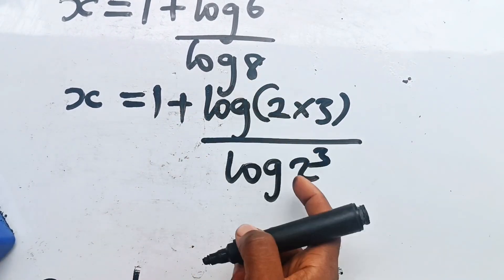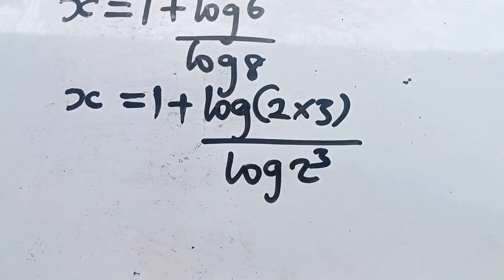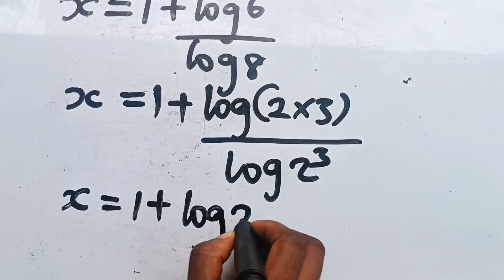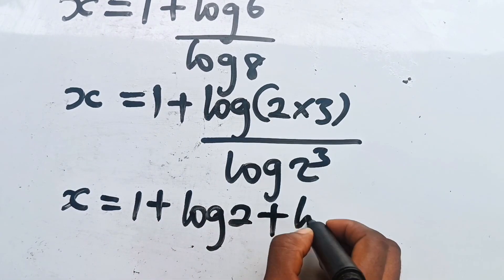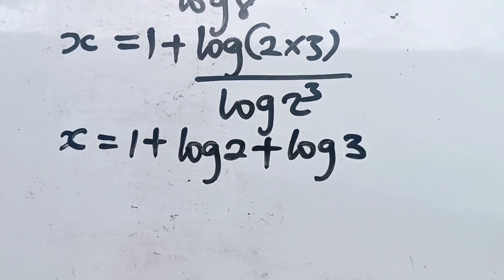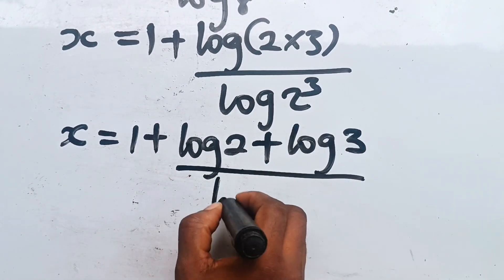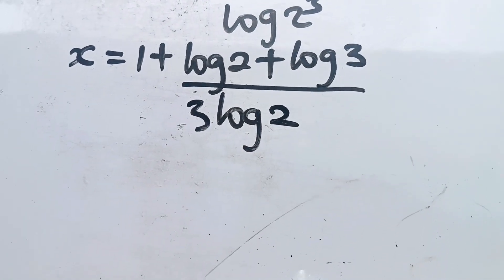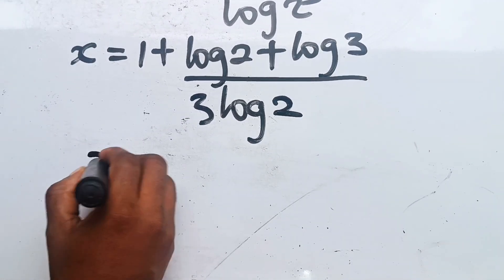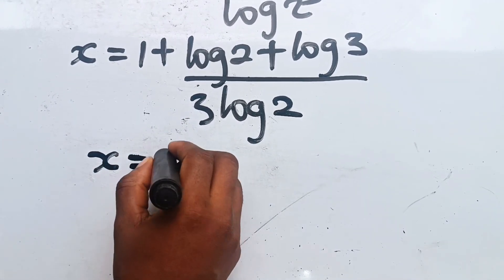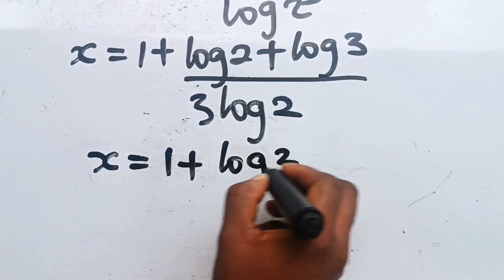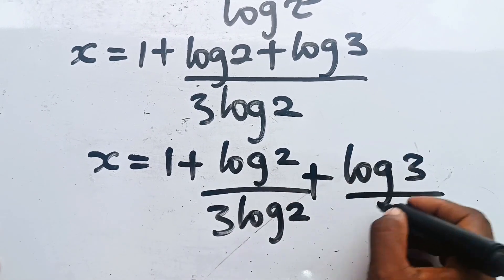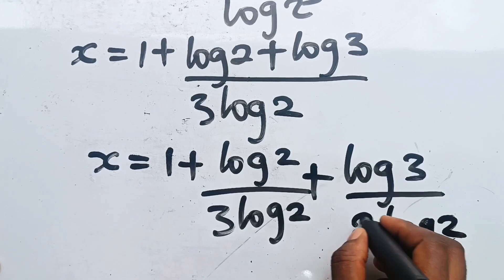8 is the same thing as 2 to the power of 3. So we have x is equal to 1 plus log(2 × 3) — which is the same as log 2 plus log 3 — divided by log(2³), which is the same as 3 log 2. So we have x is equal to 1 plus log 2 divided by 3 log 2, plus log 3 divided by 3 log 2.